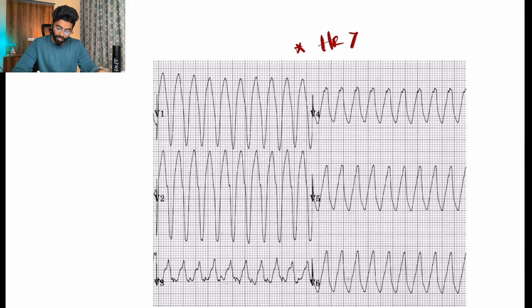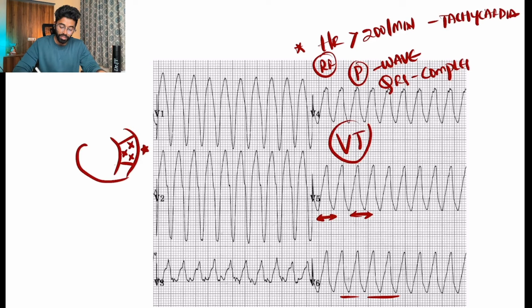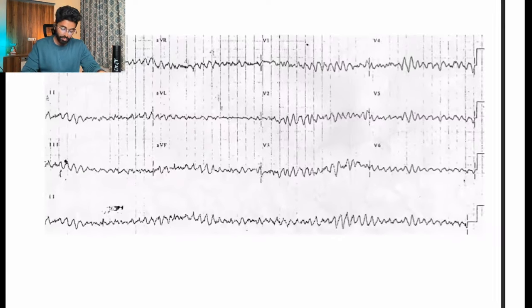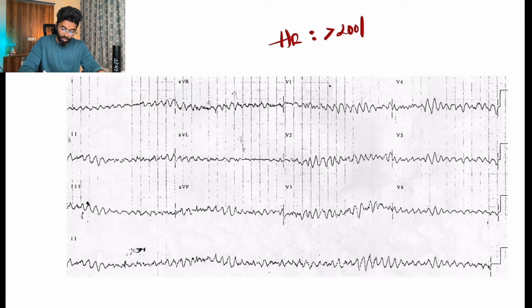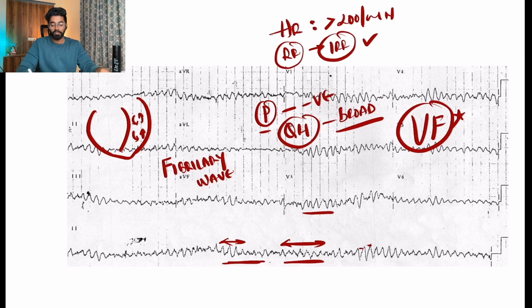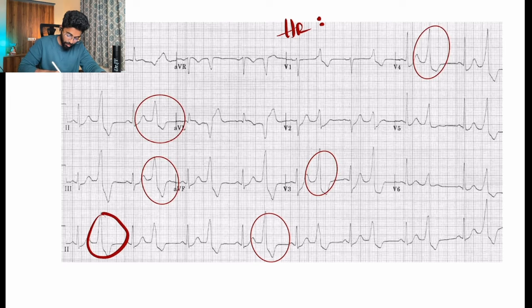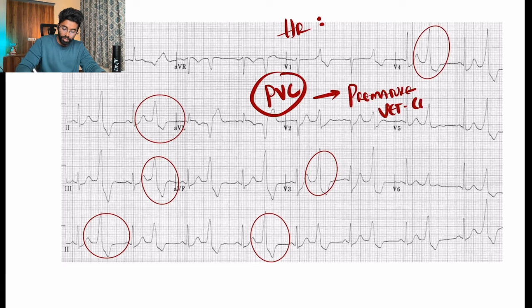For ventricular tachycardia: heart rate more than 200 per minute, regular rhythm, broad QRS complexes with tachycardia. For ventricular fibrillation: heart rate more than 200, irregular rhythm, P wave not appreciable, only broad QRS complexes visible. Both ventricular tachycardia and ventricular fibrillation are commonly seen in MI patients. Different tall bizarre waves represent PVCs — premature ventricular contractions.